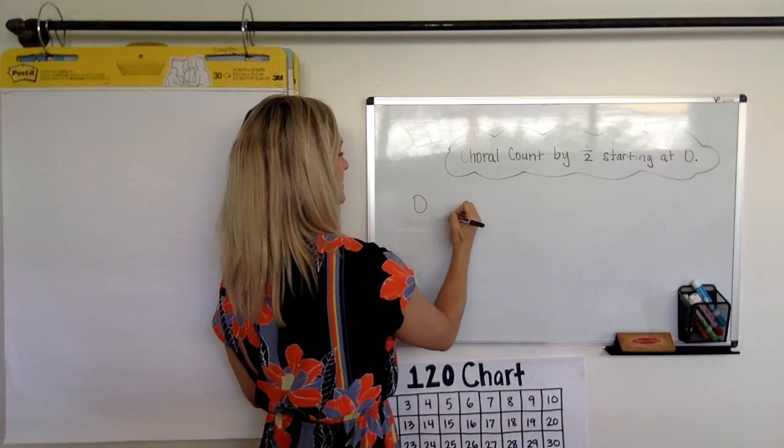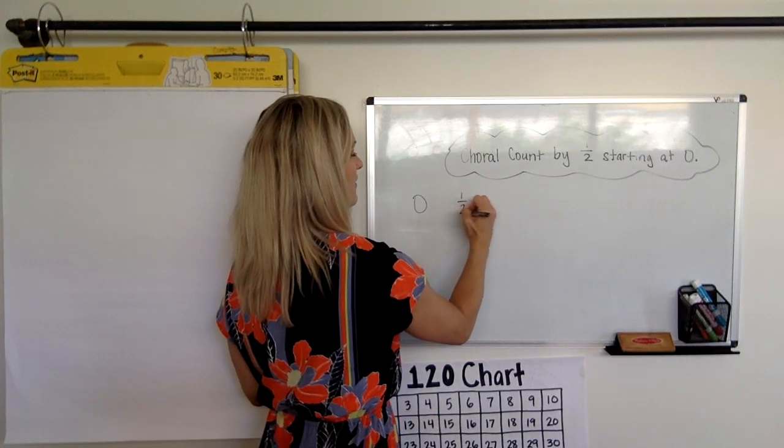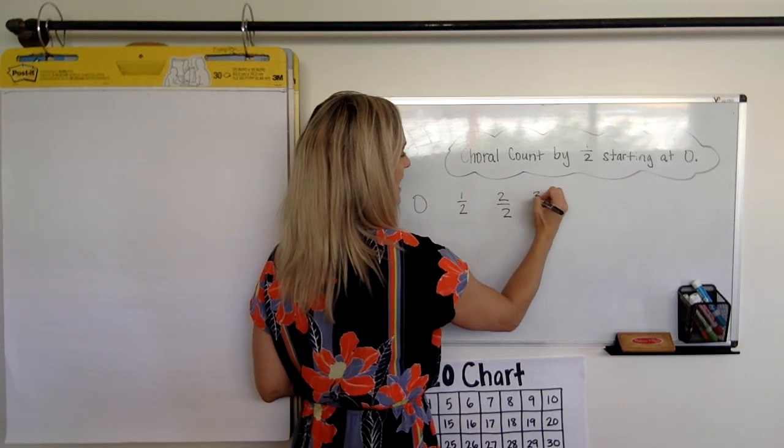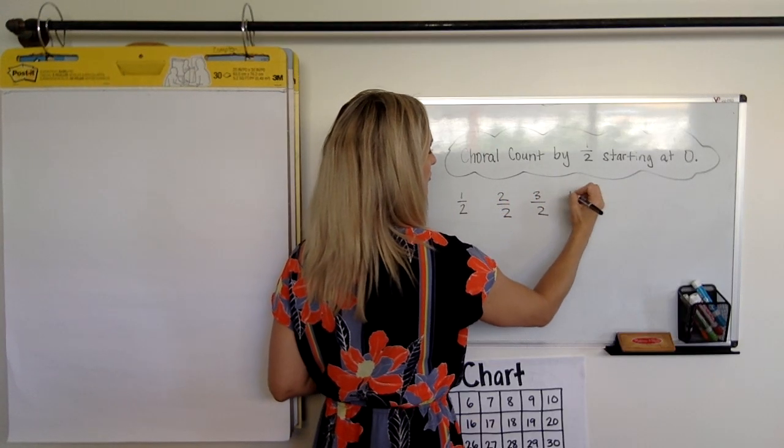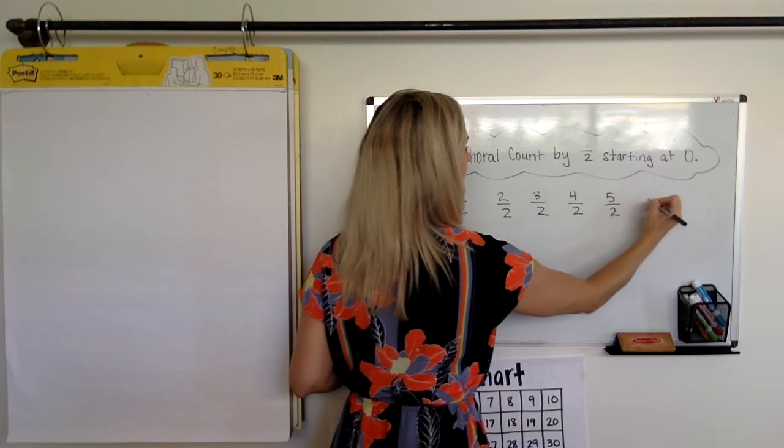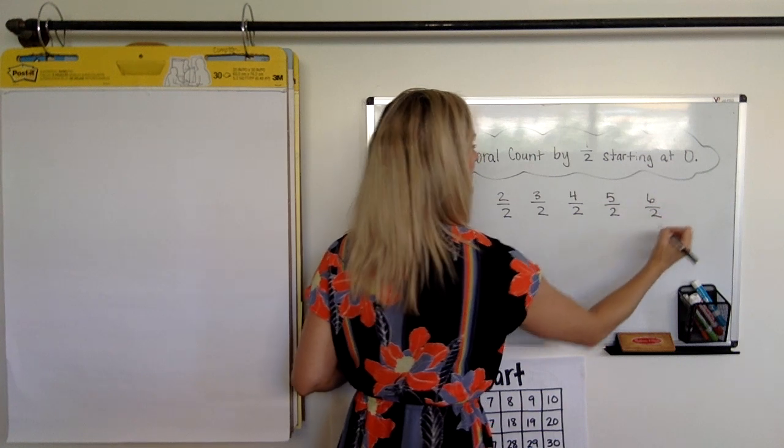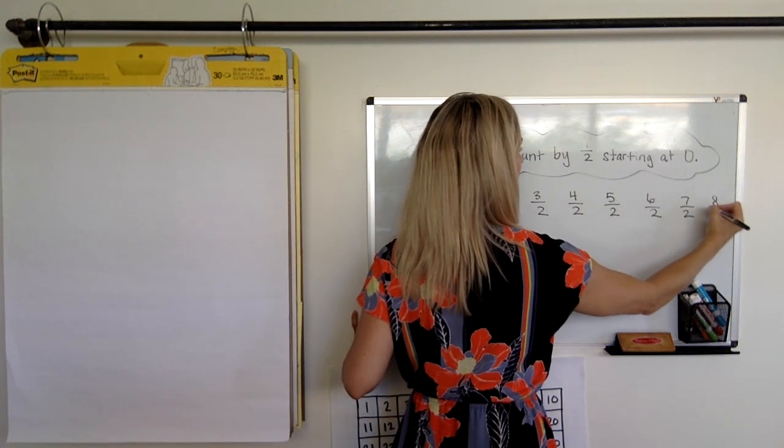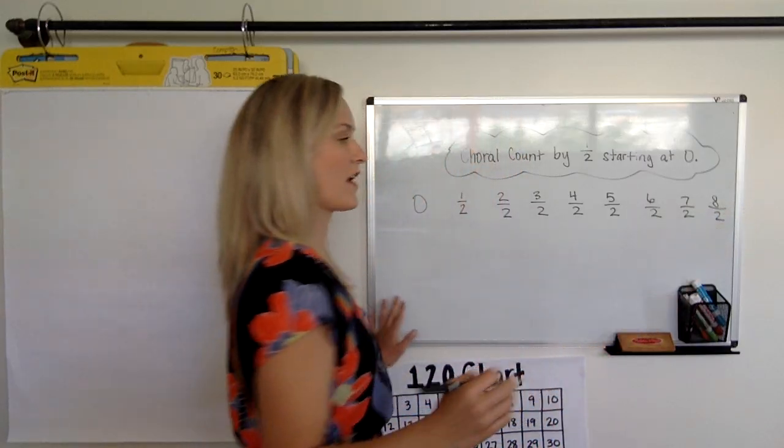Zero. One half. Two halves. Three halves. Four halves. Five halves. Six halves. Seven halves. Eight halves. All right.